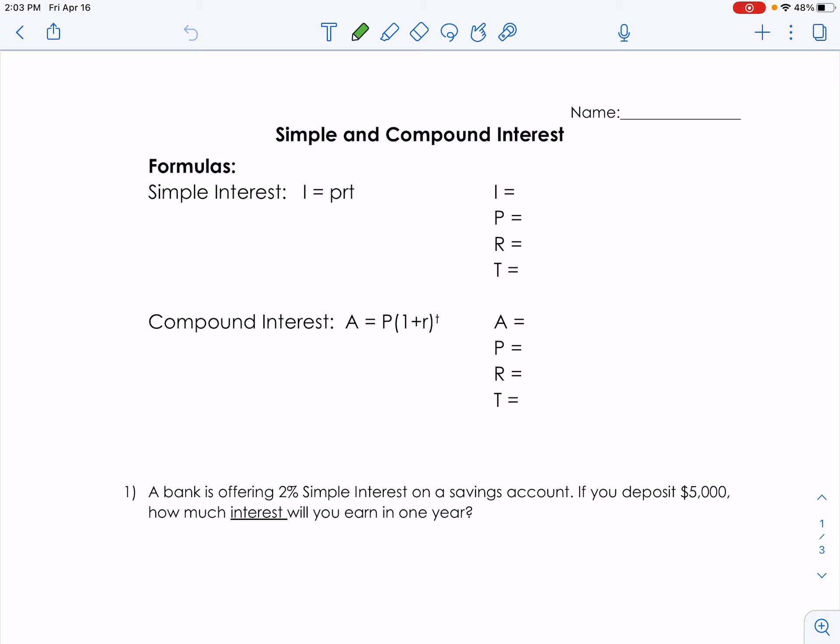Both of these formulas are on our formula chart. The first one, simple interest, our formula is I equals P times R times T. Remember that's P times R times T.